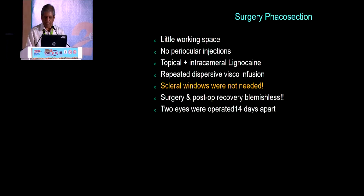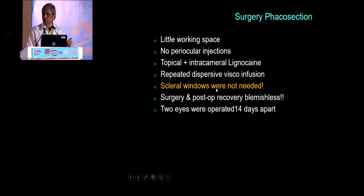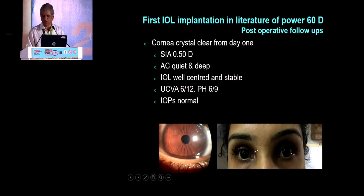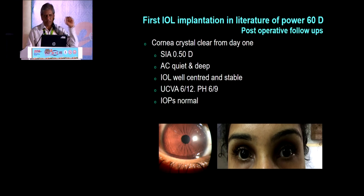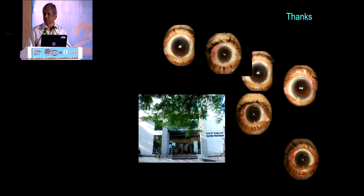Commercially this lens is not available, and there is very little working space. Avoid periocular injections — that's what reduces the size of the globe and pushes it from behind. I used topical intracameral anesthesia. Repeated dispersive viscoelastic infusion protected the endothelium. Sclerotomy windows were not necessary in any of my 12 eyes. Surgery and postoperative recovery was blemishless. Two eyes were operated 14 days apart. Pressures have been normal throughout — even on day one. We implanted a 60-diopter one-piece lens, which has never been seen in the ophthalmic literature. Thank you.